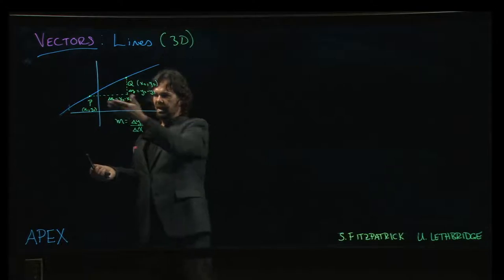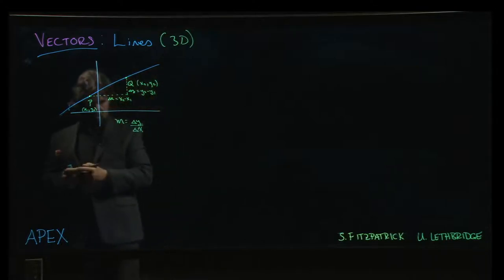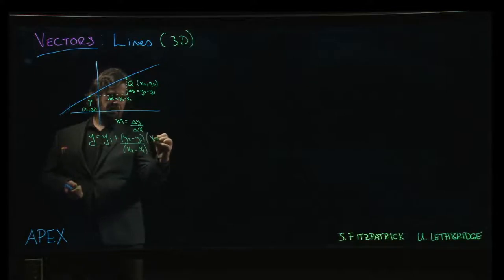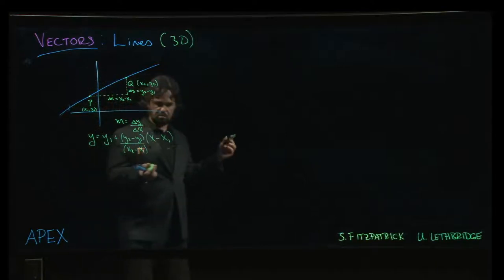And we need a point on the line. We can take any point on the line, for example, the point p. And we know that one way to write down the equation of a line, just like when we're doing, say, a tangent line, is the y value is equal to the initial point y1 on the line plus the slope times x minus x1. There we go. Equation of a line.